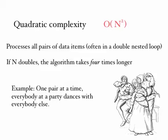Quadratic complexity, order N squared. We find algorithms of quadratic complexity typically where we're processing pairs of data items. For instance, we may have a double nested loop, for i is 0 to N, and inside that, for j is 0 to N. A double nested loop like this would typically be found in an algorithm of quadratic complexity.